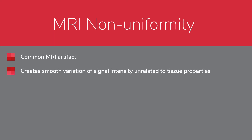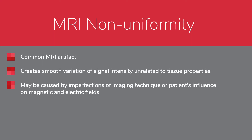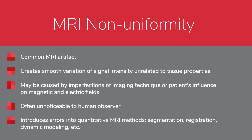Non-uniformity of image intensity is a common MRI artifact. It creates a smooth variation of signal intensity across the image that is unrelated to tissue properties. This artifact may be caused by imperfections of the imaging technique or the patient's influence on the magnetic and electric fields. Non-uniformity is often unnoticeable to a human observer, but it may introduce errors into quantitative MRI methods such as segmentation, registration, and dynamic modeling. To minimize these errors, it is often helpful to remove the non-uniformity artifact before analyzing images.